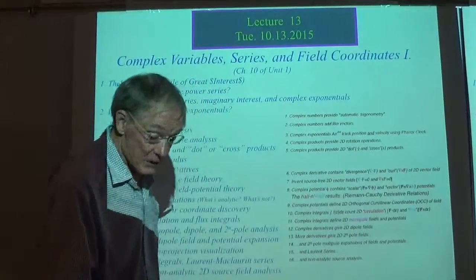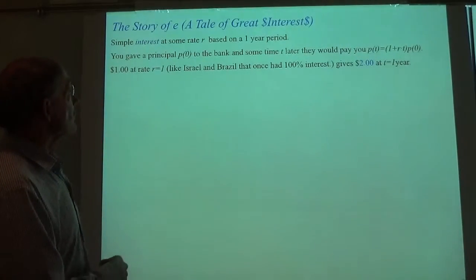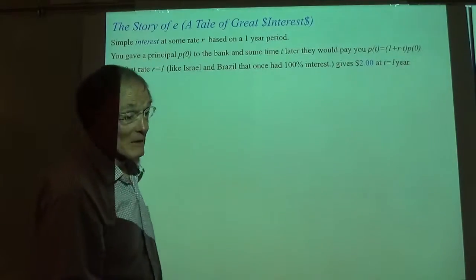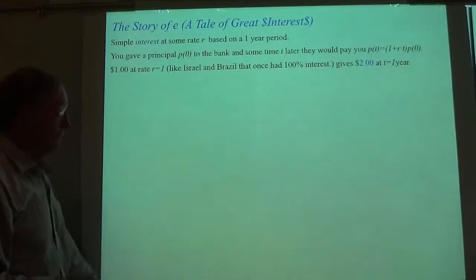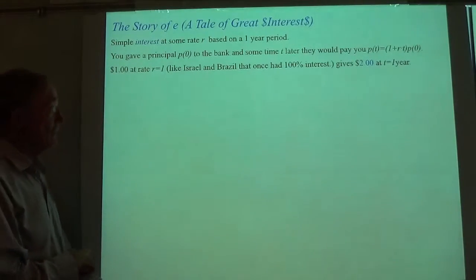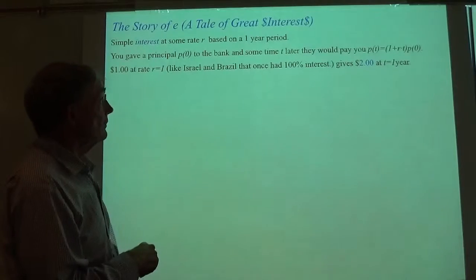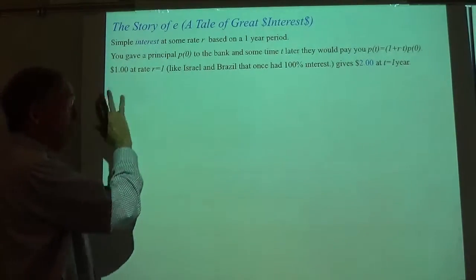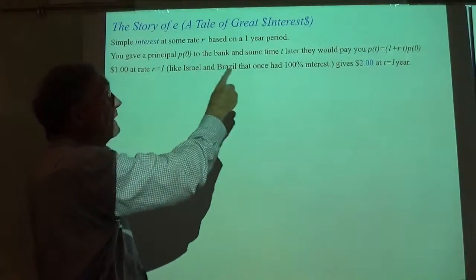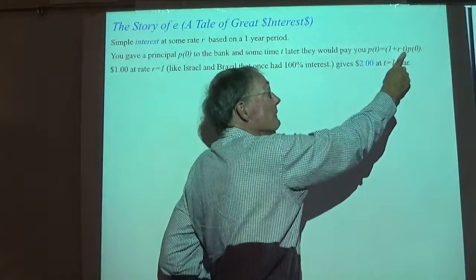Let me begin by talking about money. The exponential I'm interested in here is the one that comes from the old practice of interest, which was often regarded as a sinful thing. In the Renaissance period of Italy, only certain people — the Jewish people — could loan money and thereby profit, until the Medicis came along and realized they were losing out. The idea is simple: you give a principal to a bank, and at some time later they pay you the original amount plus some interest rate times the time.